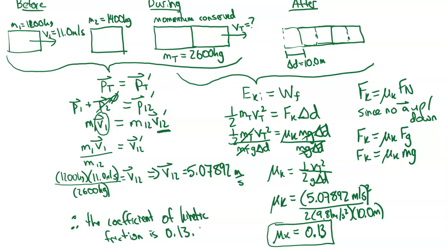To recap: the strategy is to look at just before the collision and when they combine — that's the momentum part. Then consider the energy once they're combined and moving together. You have to figure out how those two pieces fit together to solve each question. All the best.